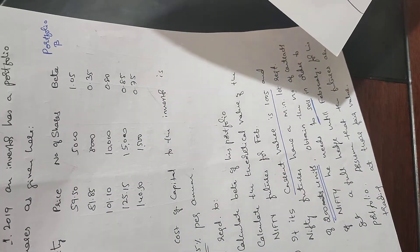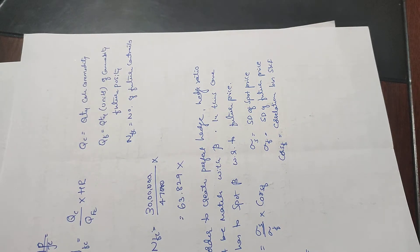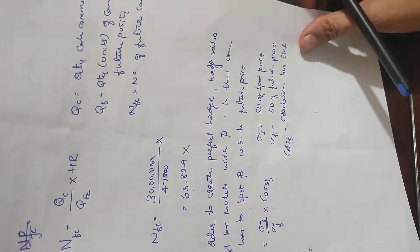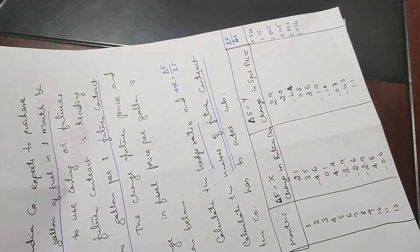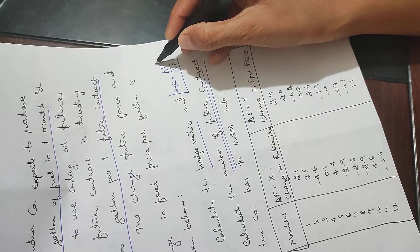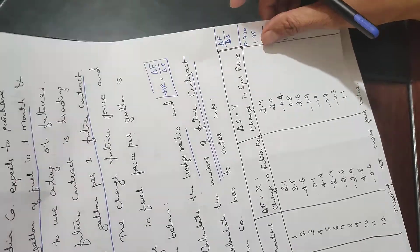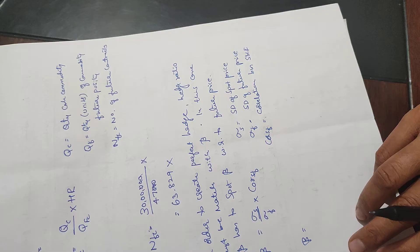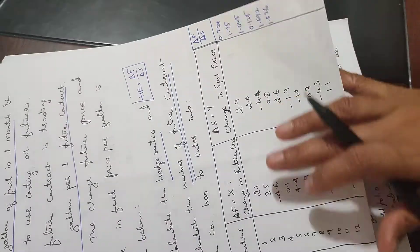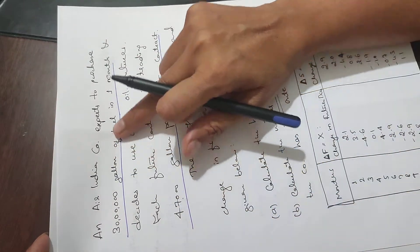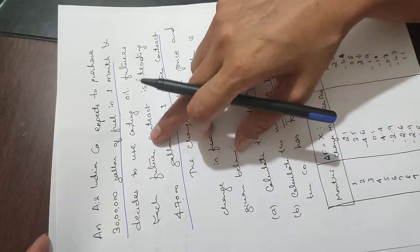Now another important concept: the hedge ratio. The formula is change in future price divided by change in spot price. Air India company expects to purchase 30 lakh gallons of fuel in one month and decides to use heating oil futures. Each future contract is for 47,000 gallons.